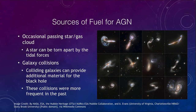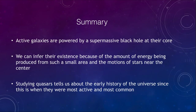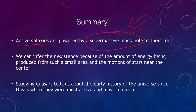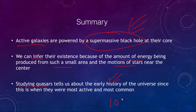In summary: active galaxies are believed to be powered by a supermassive black hole at their core. We can infer the existence of these black holes from the amount of energy produced from such a small area and from the motions of stars near the center. Studying quasars tells us about the early history of the universe, since they were most active and common in the first few billion years. For the last 10 billion years, nothing has been able to feed a massive black hole enough to make a quasar, as the universe expanded and material spread out.